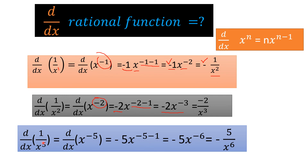Another example: the derivative of 1 upon x power 5. Taking x to the numerator gives d by dx of x power minus 5. Applying the power rule, minus 5 comes to the beginning, and the new power is minus 5 minus 1 equals minus 6, giving minus 5 x power minus 6. Taking x to the denominator gives minus 5 upon x power 6. So the derivative of 1 upon x power 5 is minus 5 upon x power 6.